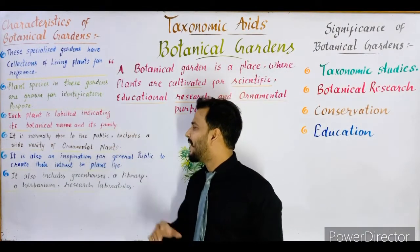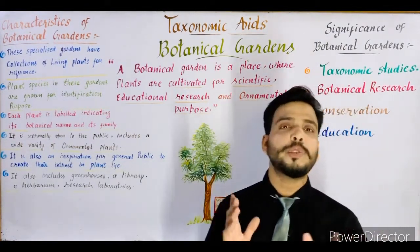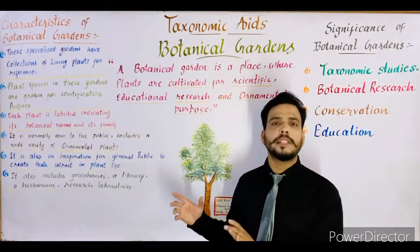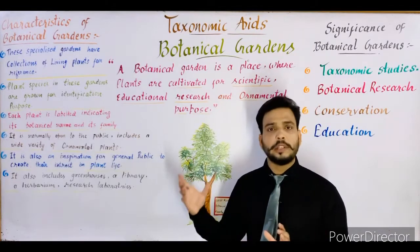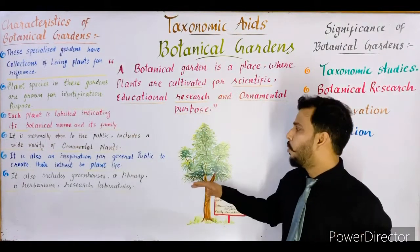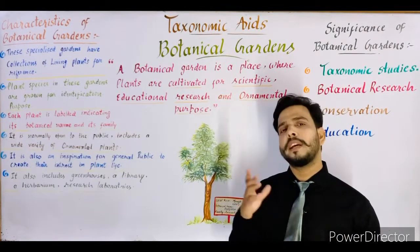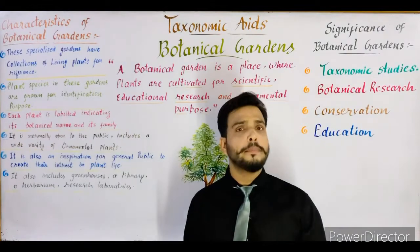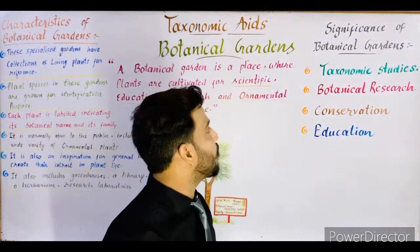Botanical gardens also include greenhouses — glass structures with walls and roof — where special plants requiring specific conditions like low or high temperature, humidity, or protection from pathogens are kept. A small library may also be present for study purposes. A herbarium of the dried plant collection from the garden may be stored in a herbaria section. Research laboratories for scientific research are also established in botanical gardens.